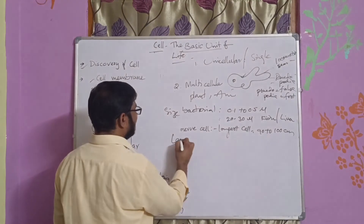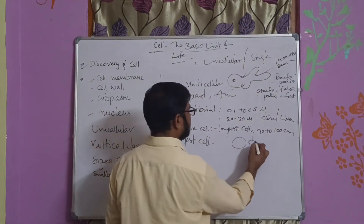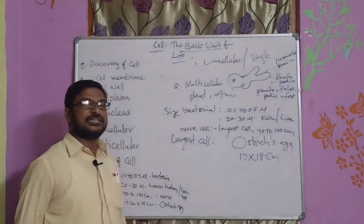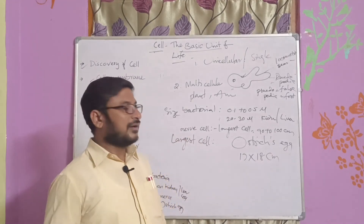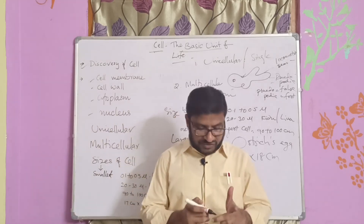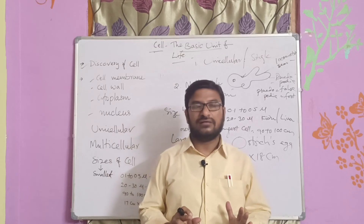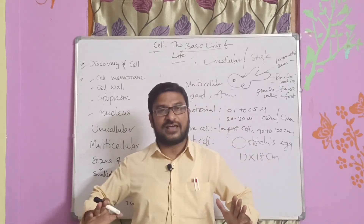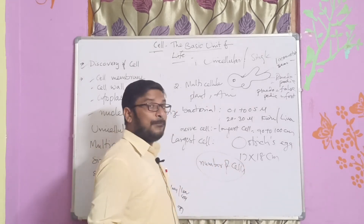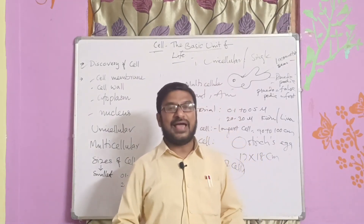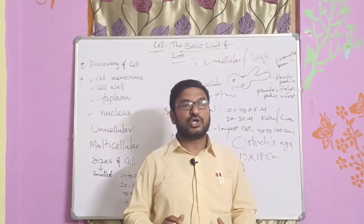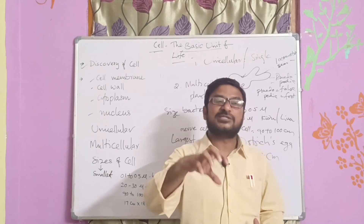The largest cell ever known is the egg of an ostrich, with a size of about 18 by 17 by 18 centimeters. The smallest cell is the bacterial cell, at 0.1 to 0.5 microns. The size of an organism depends on the number of cells present in it, not the size of the cells. For example, comparing a human being and an elephant — both have very small cells. The size of the organism depends on the number of cells in it.